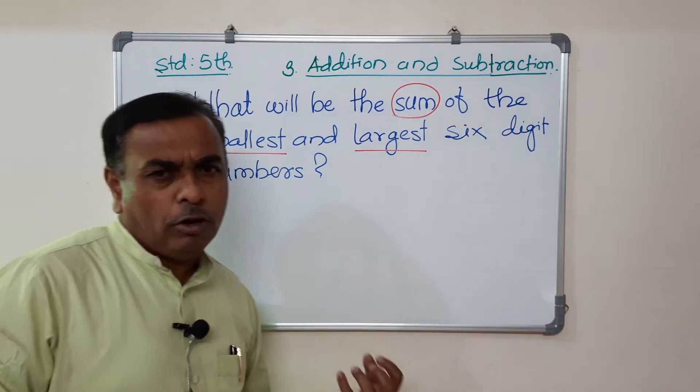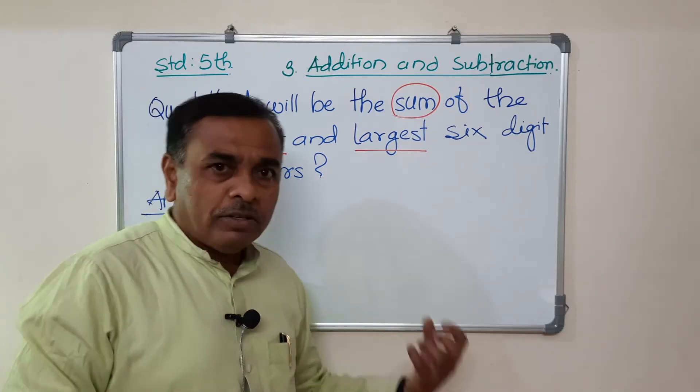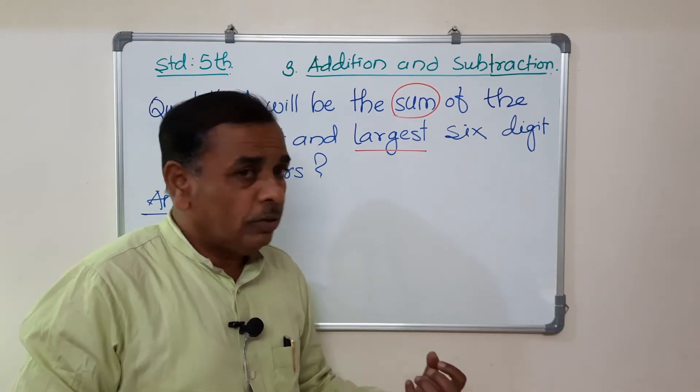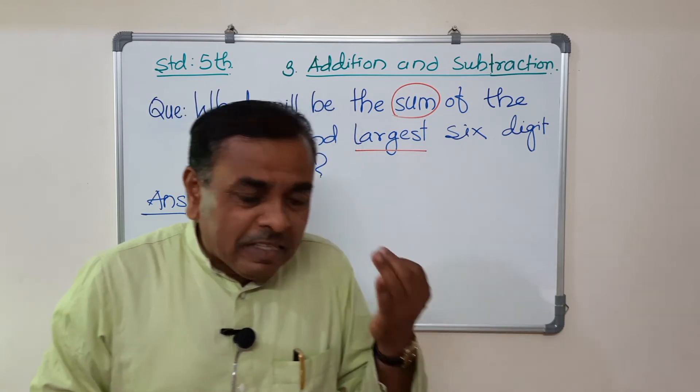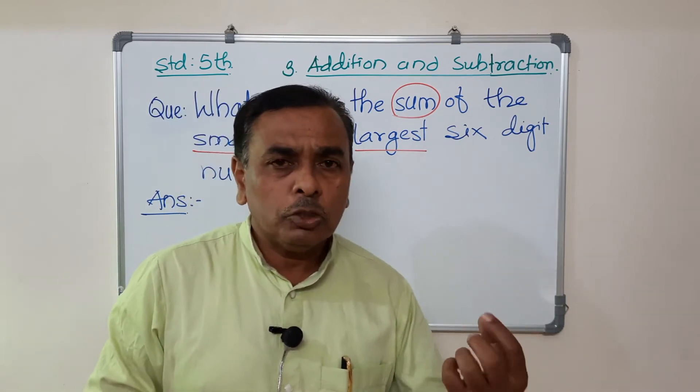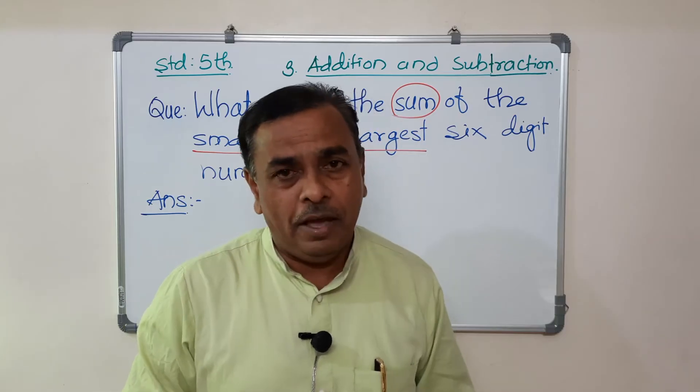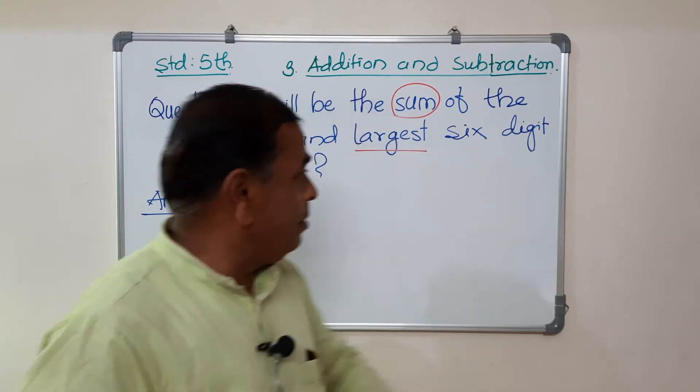Smallest and largest. But how many digits? Six digit numbers. Smallest, smallest and largest.